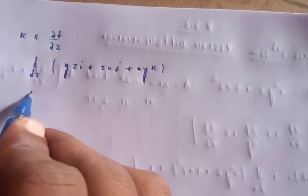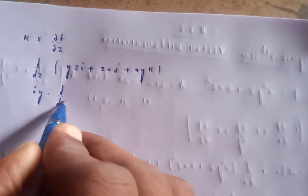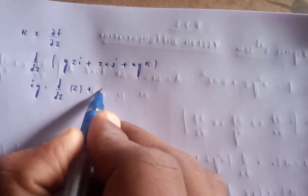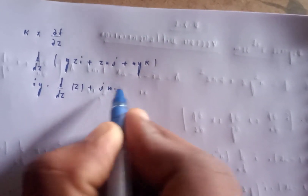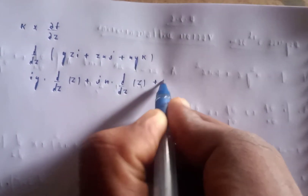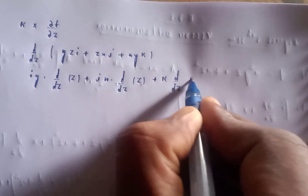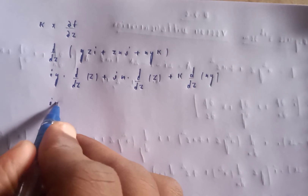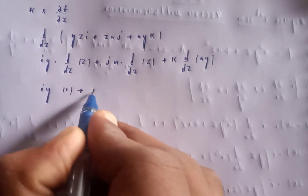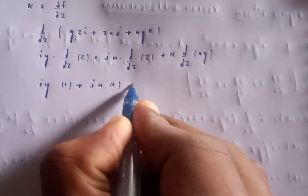With respect to z, yz gives y times i constant, and zx gives x times j constant, and xy is constant with respect to z giving zero for k.